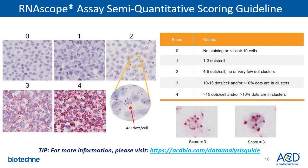With the semi-quantitative approach, you may manually count the number of dots per cell and score the sample from 0 to 4 based on the scoring guidelines. For example, if you see 4 to 9 dots per cell with no or very few clusters, that is a score of 2, which is what we would like to see with positive control POLR2A staining on most samples during sample QC. If the staining shows more than 15 dots per cell and 10% of the dots are in clusters, you would score the sample as 4.